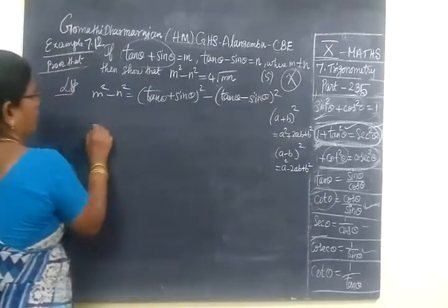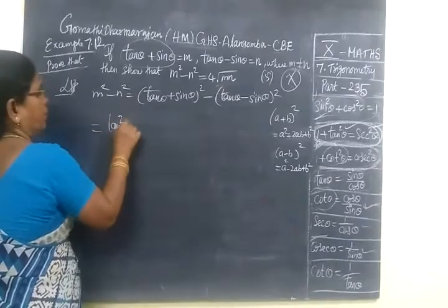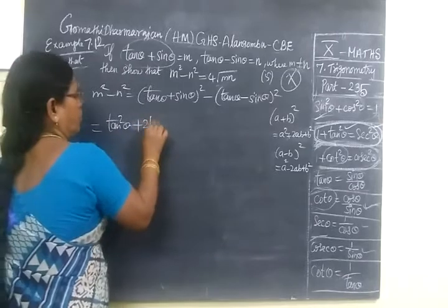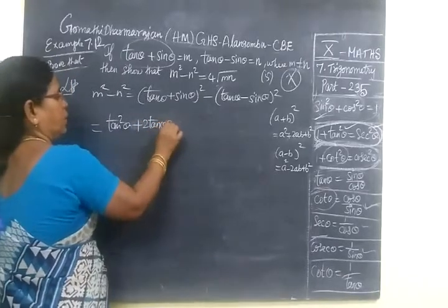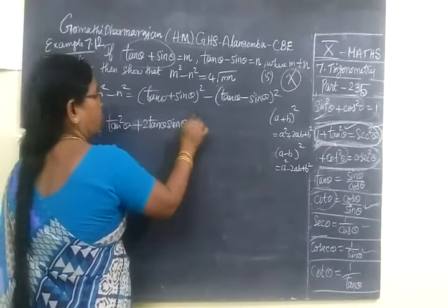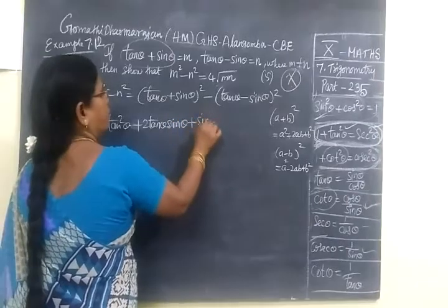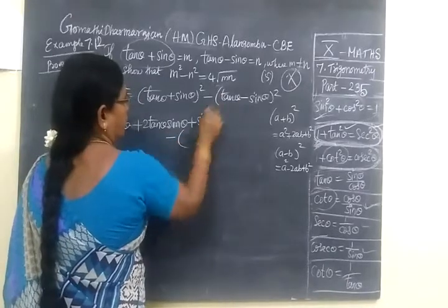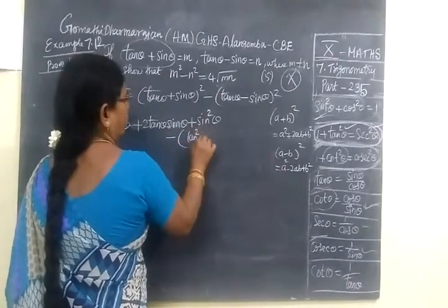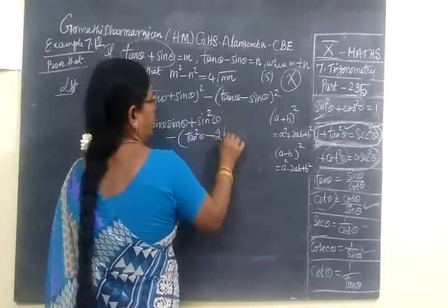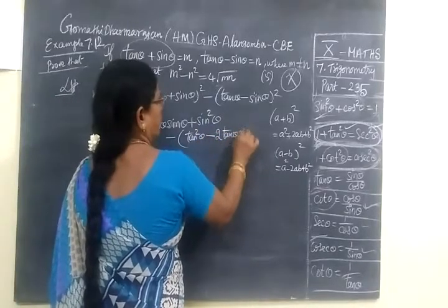Then A minus B whole square equal to A square minus 2AB plus B square. It is the same way already. Tan square theta plus 2 tan theta sin theta plus sin square theta. Then minus.